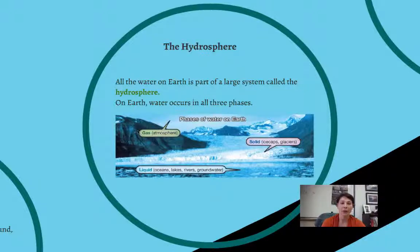And so water vapor exists in the atmosphere, and that's the gaseous form of water. There's liquid water in oceans, lakes, rivers, and in groundwater. There is solid water in the ice caps and in the glaciers. And so we can see that the water exists on Earth in the hydrosphere in all three different phases of matter. So all of these different forms of water are part of the hydrosphere.